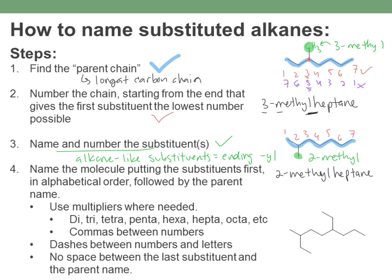Now let's look at what happens when you have more than one of the same substituent — you have to use a multiplier. If you have two of something, it's di. If three, it's tri. Four is tetra. Penta is five, hexa is six, hepta is seven, octa is eight, and so on.